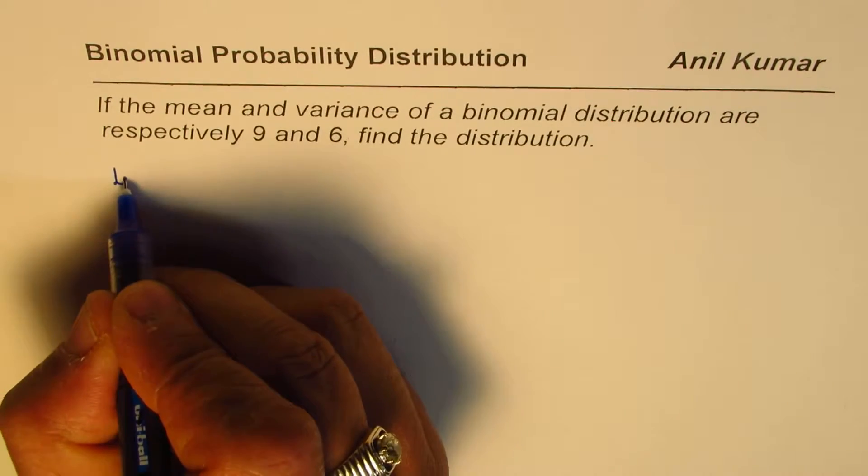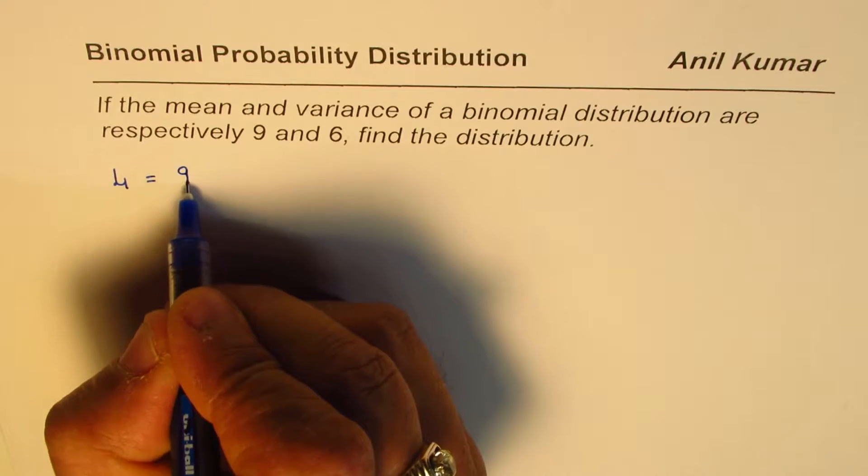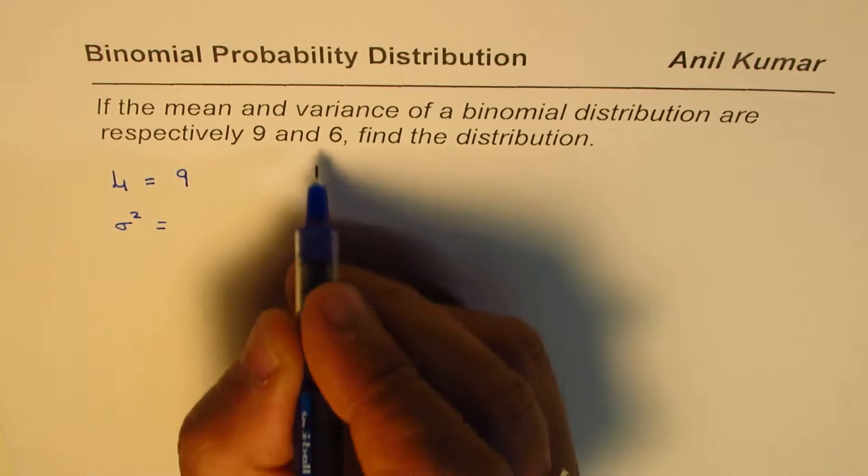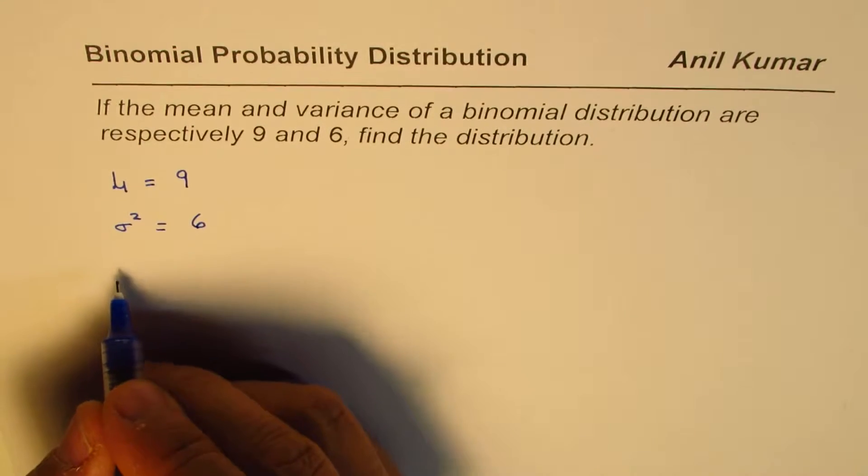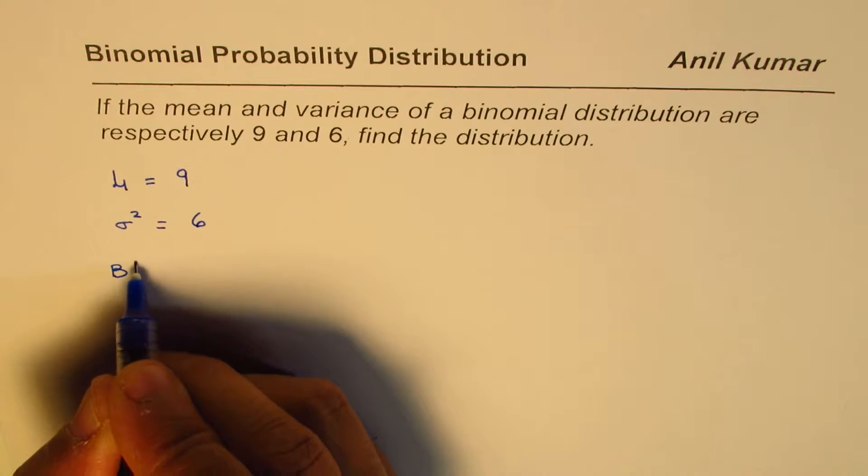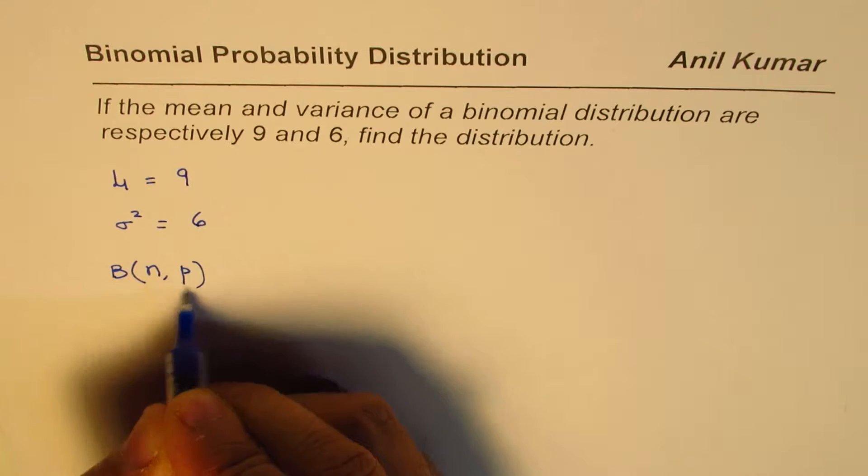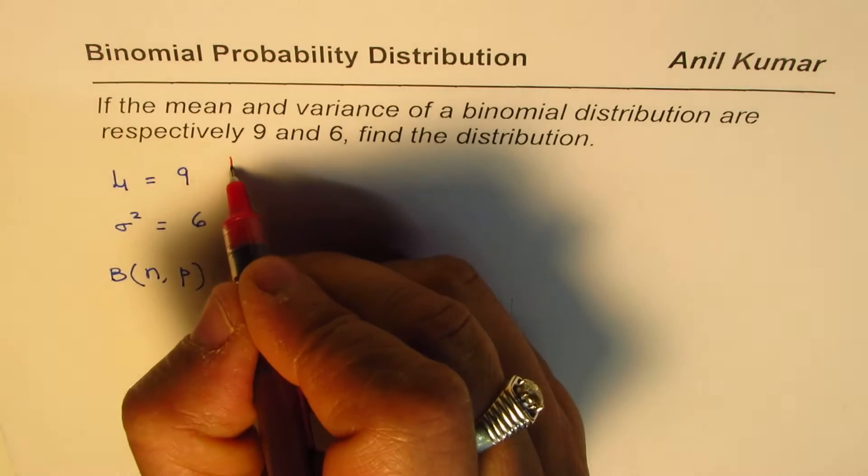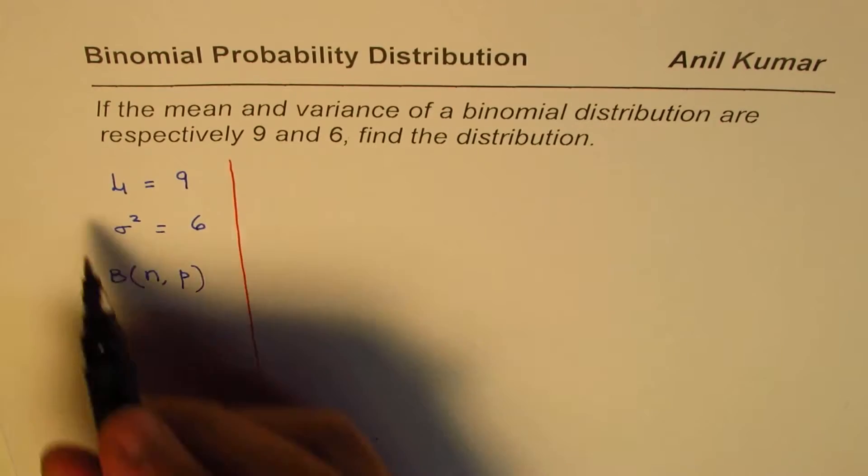In this particular case, we are given the mean equals 9 and the variance σ² equals 6, and we need to find the binomial distribution. Basically, we need to define the number of trials and the probability for success. It is a direct application of the formula and rearranging the values.